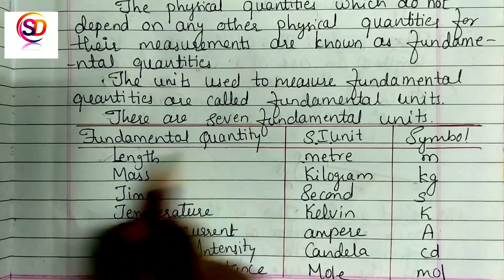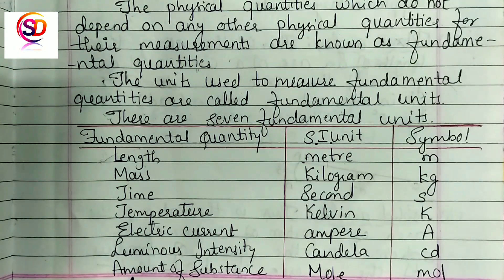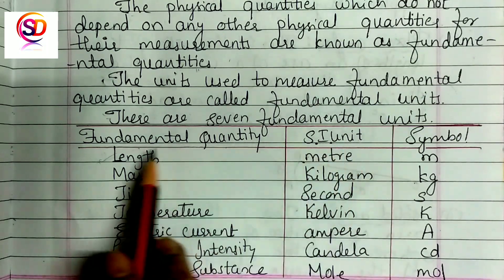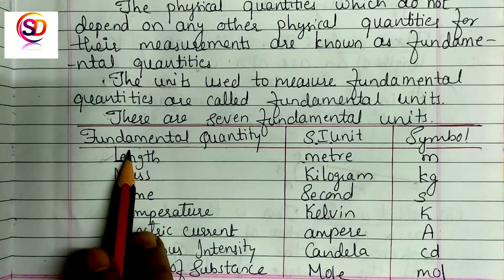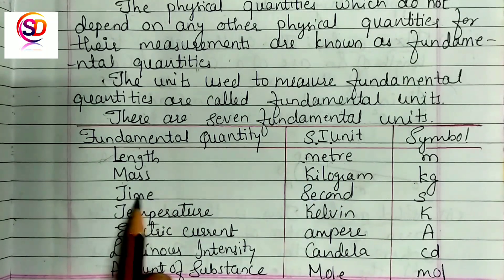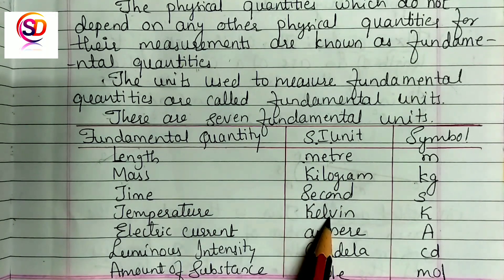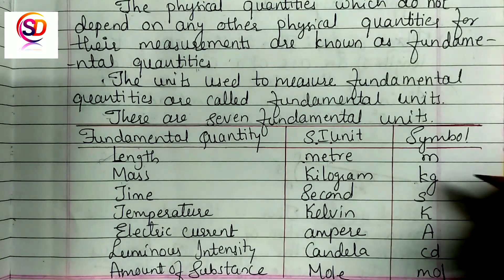The seven fundamental quantities are: length, mass, time, temperature, electric current, luminous intensity, and amount of substance. The SI units used to measure these are: meter for length, kilogram for mass, second for time, Kelvin for temperature, ampere for electric current, candela for luminous intensity, and mole for amount of substance.